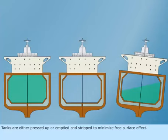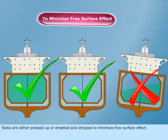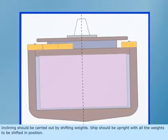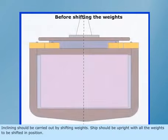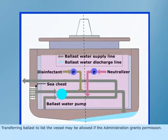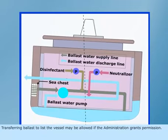Tanks are either pressed up or emptied and stripped to minimize free surface effect. Inclining should be carried out by shifting weights. Ship should be upright with all the weights to be shifted in position. Transferring ballast to list the vessel may be allowed if the administration grants permission.